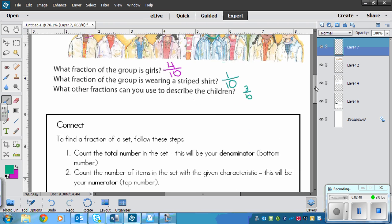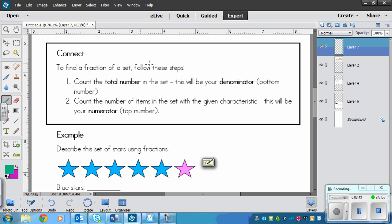All right, so let's look at the connect then. It says to find a fraction of a set, follow these steps. You need to count the total number in the set, so that was all of the students, the total ten students, and that's your denominator, so that's the bottom number. Then you need to count the number of items in the set with the given characteristics, and that's going to be your numerator or the top number.